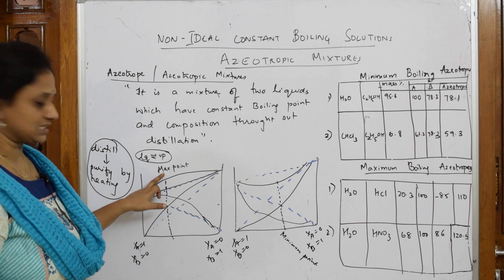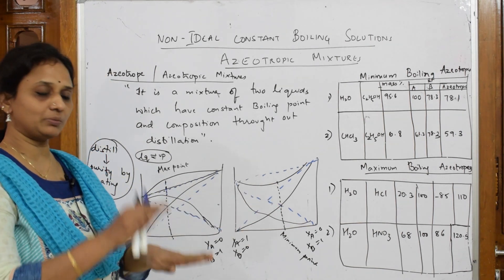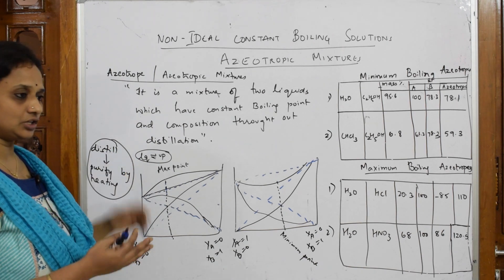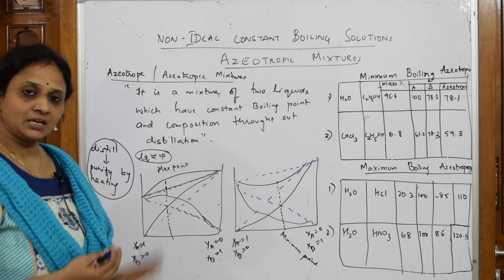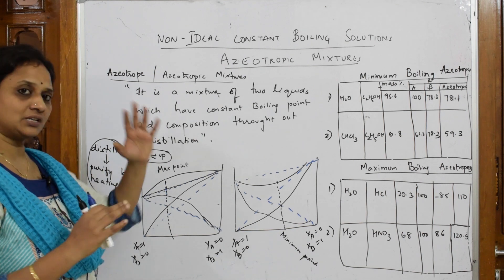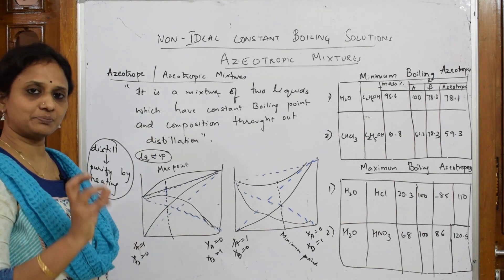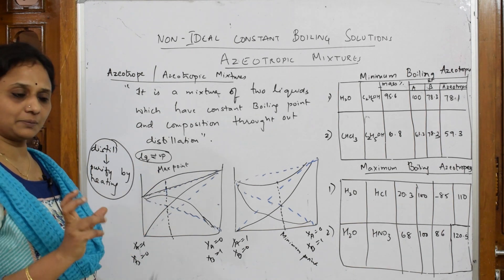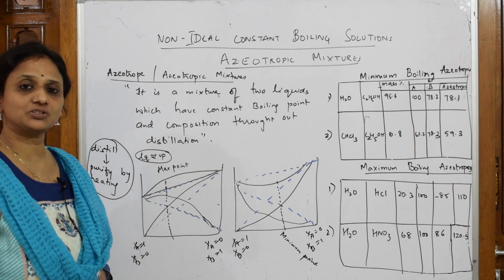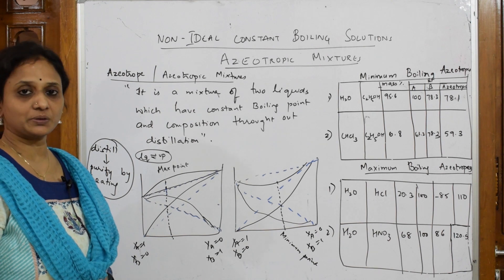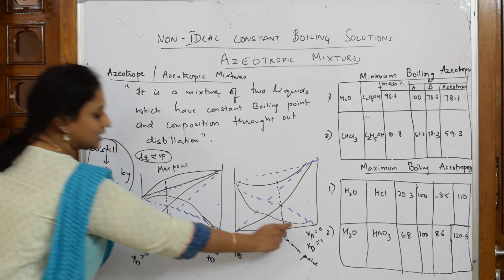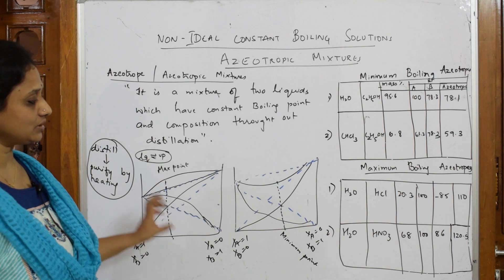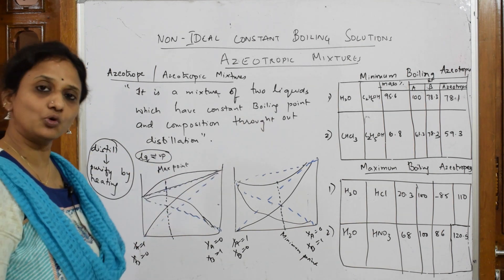So at the maximum point or the minimum point, the liquid and vapor phases become equalized. When you distill and condense, you get a liquid of that exact composition — nothing else is present. That particular phase at the maximum or minimum point is what we call an azeotropic mixture. That is the concept of azeotropes.